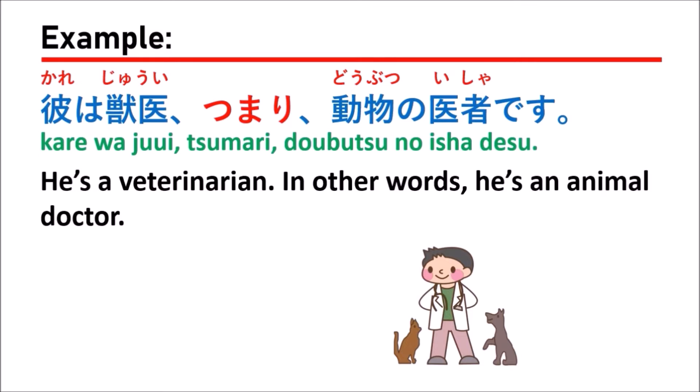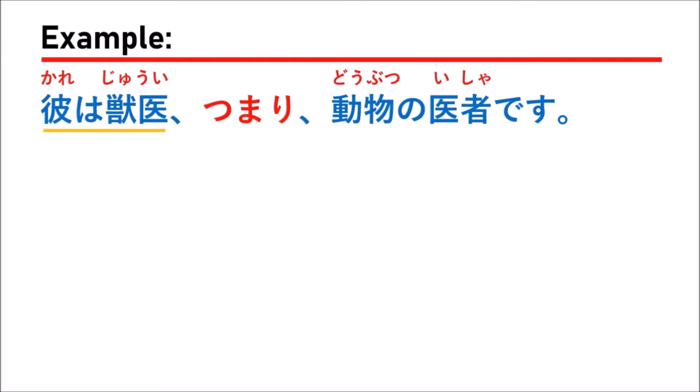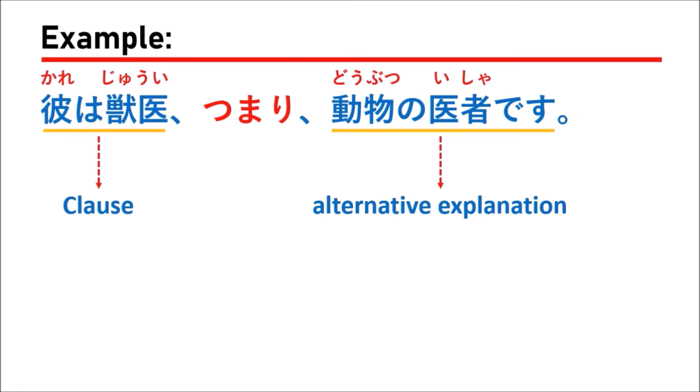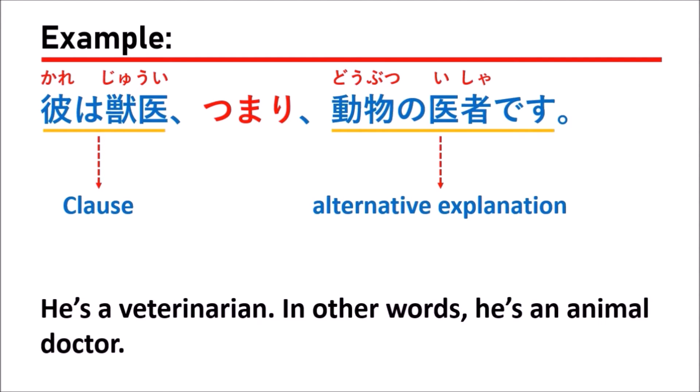What is the grammar in this sentence? We have 彼は獣医 as the clause, followed by つまり, followed by 動物の医者です as the alternative explanation. If you just say 彼は獣医, someone might not understand what 獣医 means. So to explain more clearly, you use つまり, and after つまり you put another way to explain the meaning — 動物の医者です — using easy words to understand.